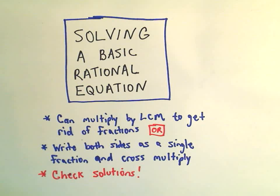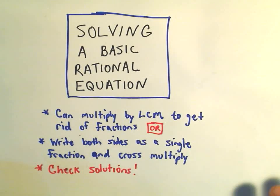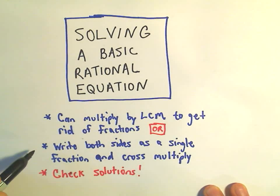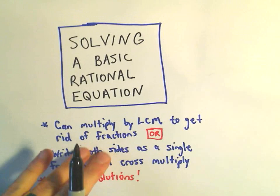As a rule with rational equations, you should always check your solutions, because sometimes one of your solutions may produce a value that's undefined. So in general you do want to check these. The way that I'm going to do these, at least when they're relatively simple, I like to write both sides as a single fraction and cross multiply.